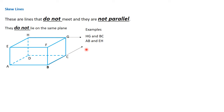Again, the line AB and EH — if you continue those two lines, even backward, they'll never be able to meet if this is an actual cuboid. So lines that do not meet and are not parallel are called skew lines. The only reason they do not meet and are not parallel is because they lie on different planes; they don't lie on the same plane.